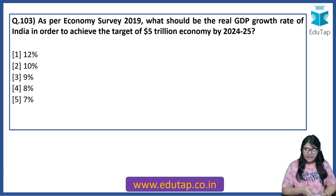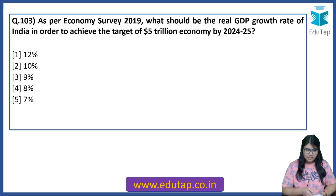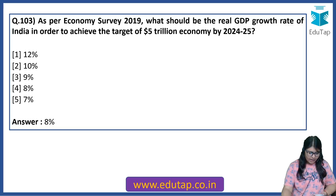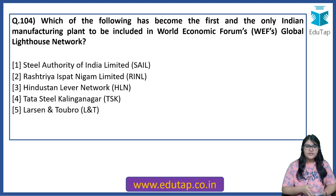As per the Economic Survey 2019, what should be the real GDP growth rate of India in order to achieve the target of a $5 trillion economy by 2024-25? The answer is 8%. A real GDP growth rate of 8% has to be achieved if we want to be a $5 trillion economy by 2024-25.